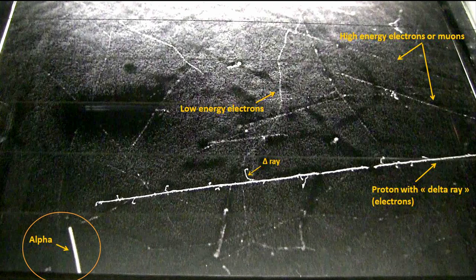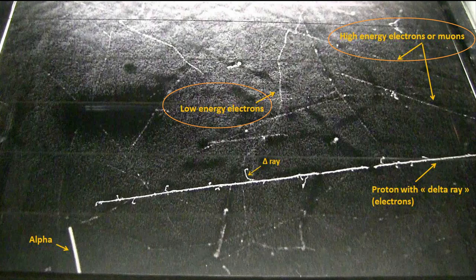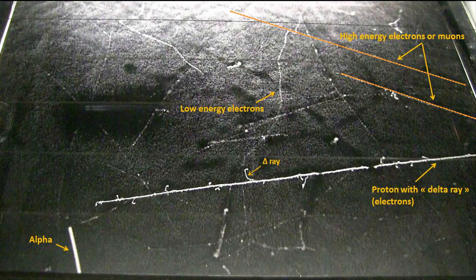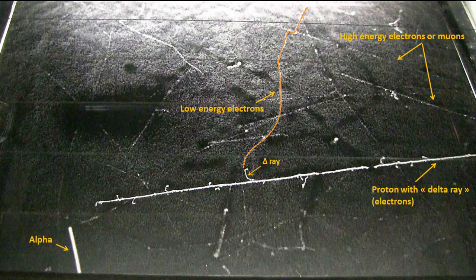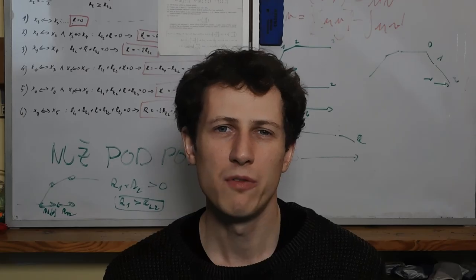As you can see on the picture here, we have different ionizations for different particles, like alpha particles, protons or electrons. There is also a difference between electrons of different energy, as you can see here, where electrons of high energy travel in a straight line, whereas electrons of low energy are kinda wandering in the medium.